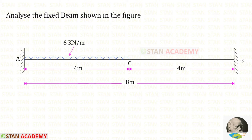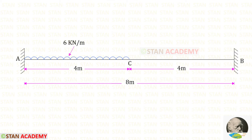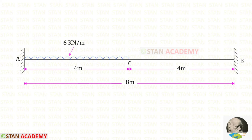Hello everyone. Today we are going to analyze this fixed beam. In this beam we have a uniformly distributed load of 6 kN per meter acting on the left half span. The total length of the beam is 8 meters. Now we are going to find the fixed end moments MA and MB.